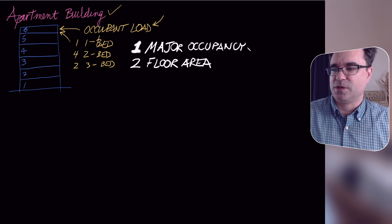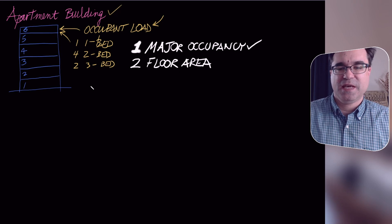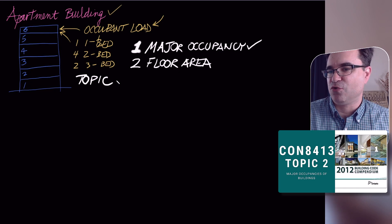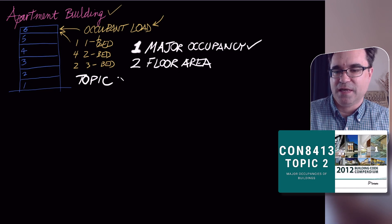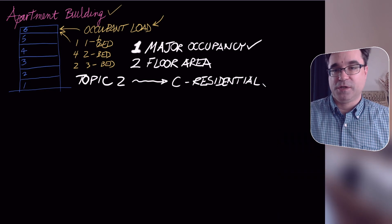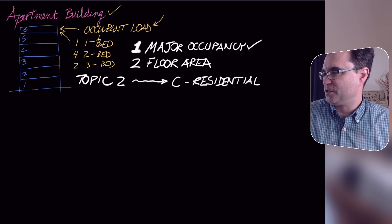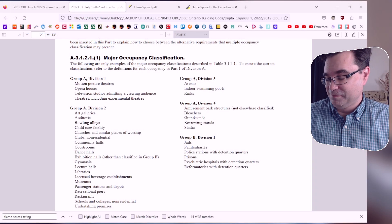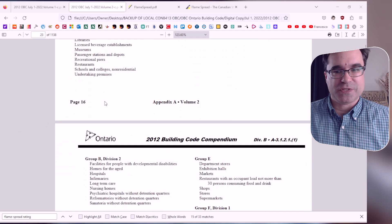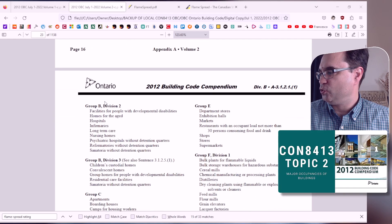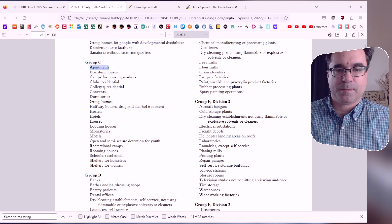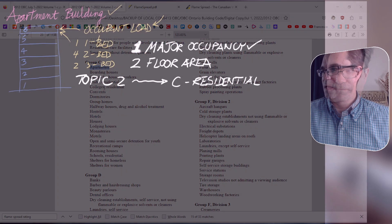We'll start with the major occupancy. From topic two, the major occupancy for an apartment building is Group C, which is residential. I got this from Appendix A — you can see that apartments are listed right there under Group C.